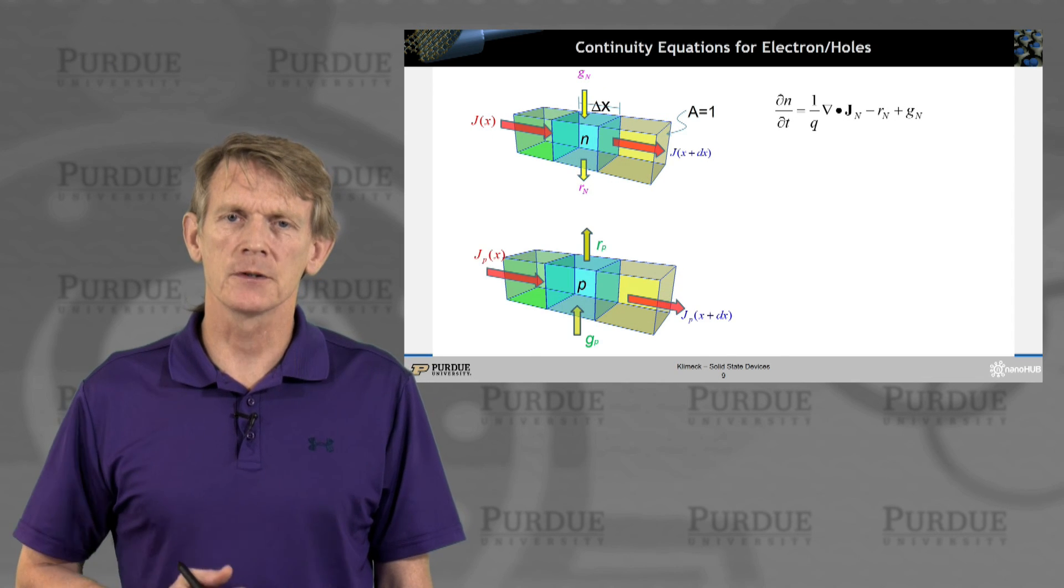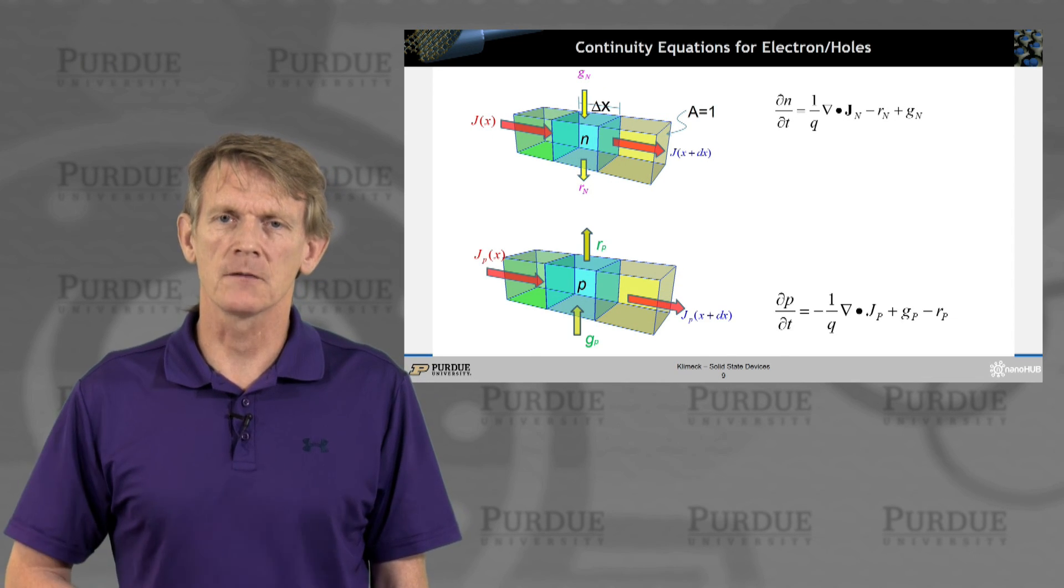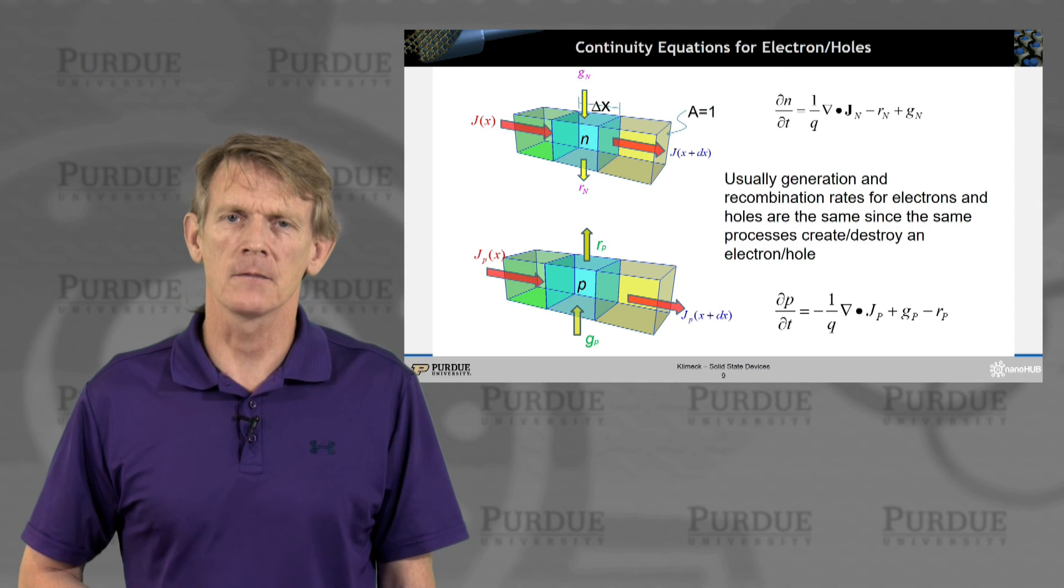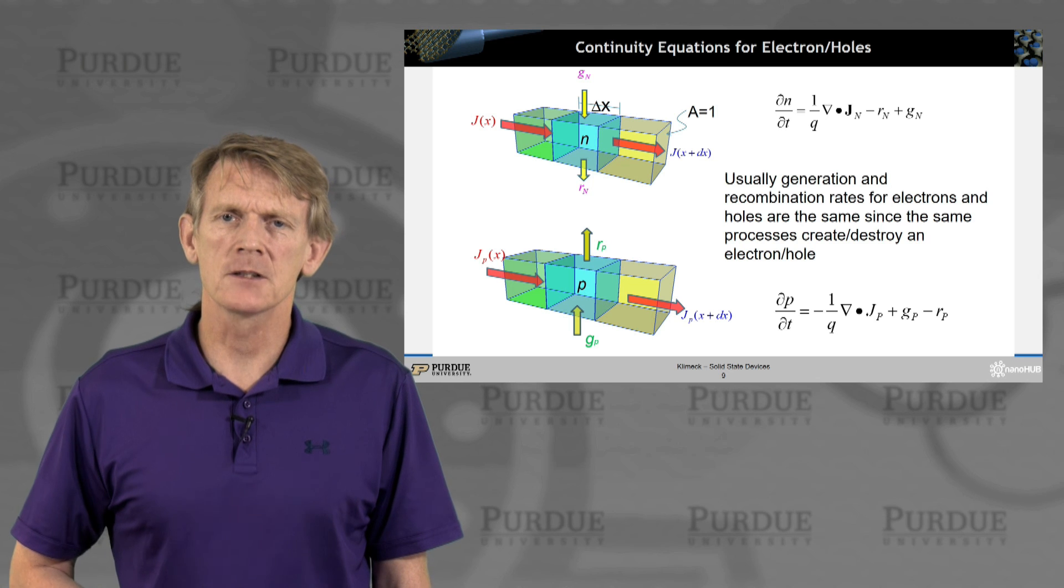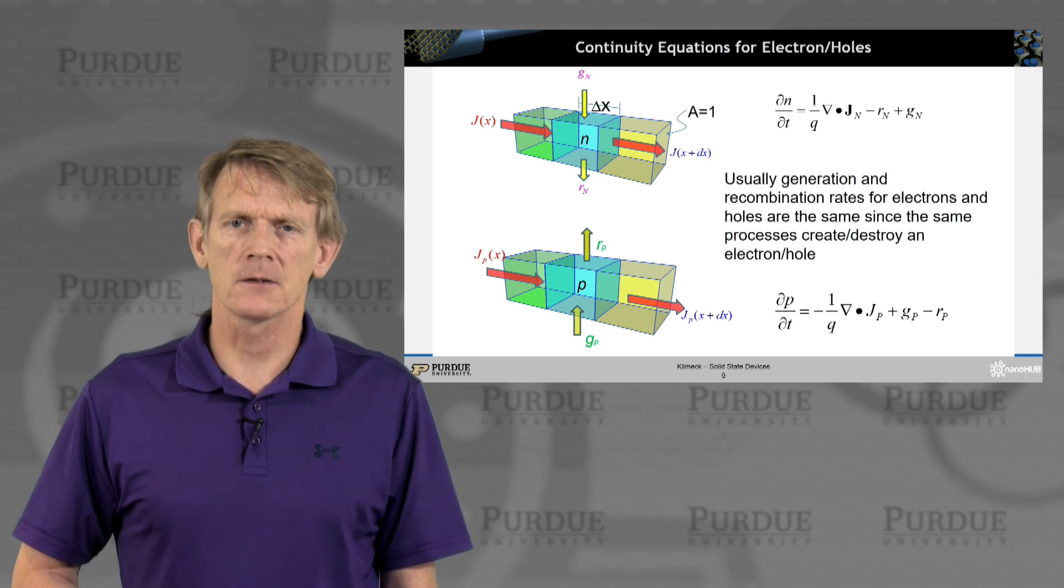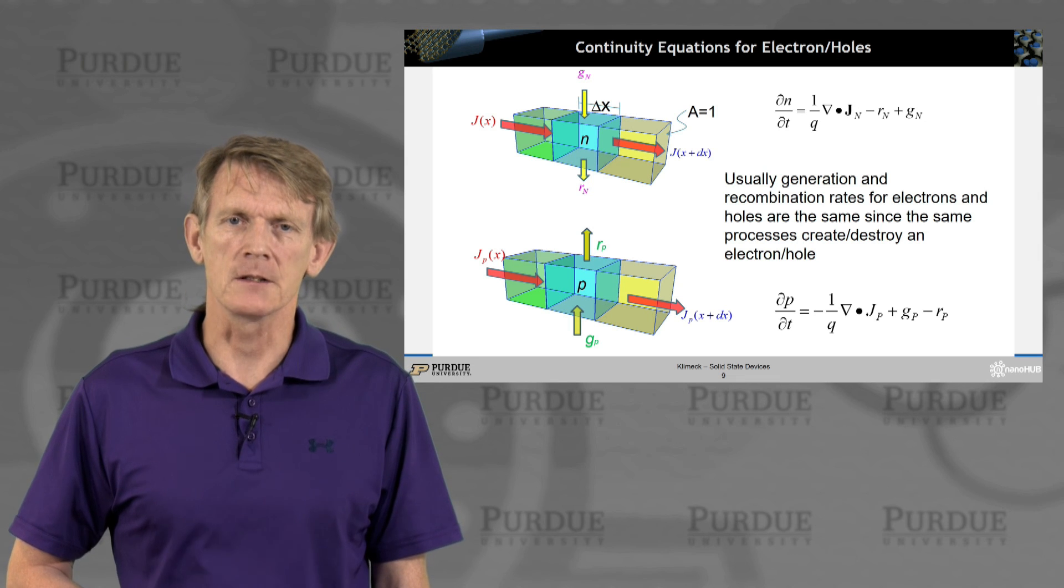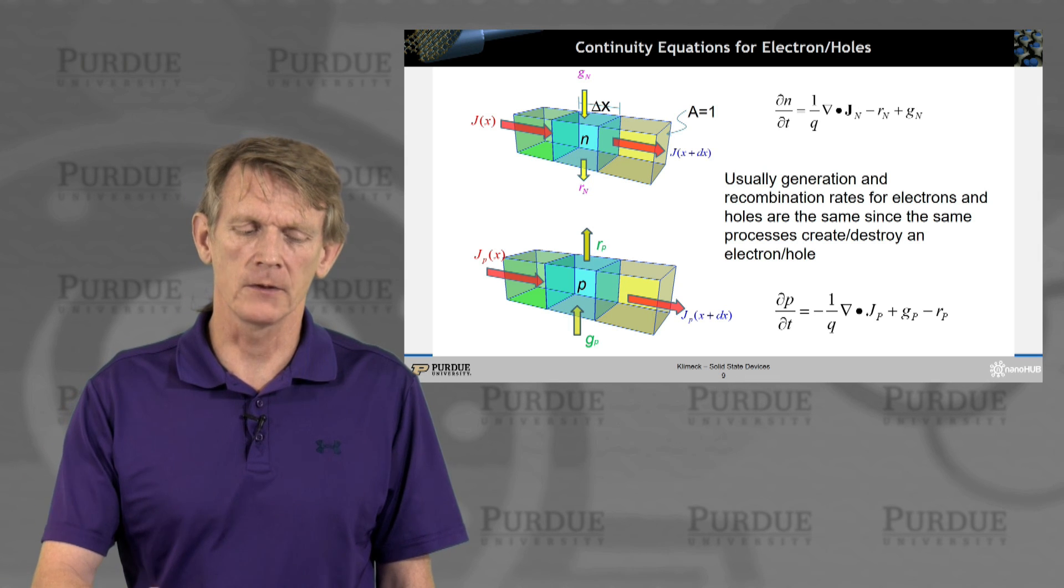All right, so you can do this for electrons. I'm sure you can imagine to do the same thing for holes. No real complication here. Usually the generation and recombination rates for electrons and holes are the same, since they're connected, since they sort of destroy each other. So you can connect the rates.